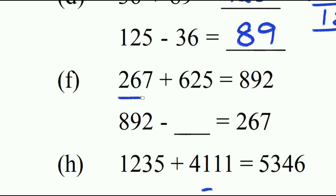Next: 267 plus 625 — two addends given. The total sum is 892.